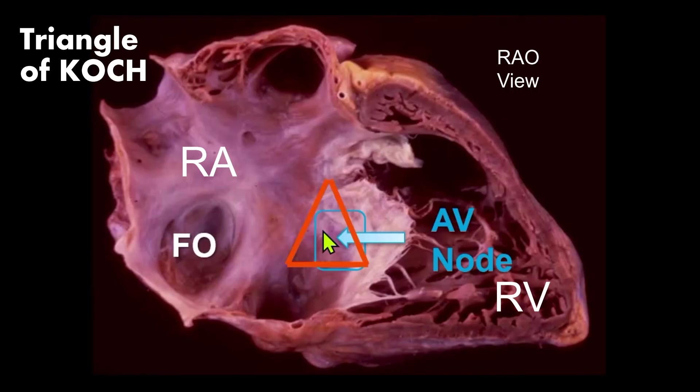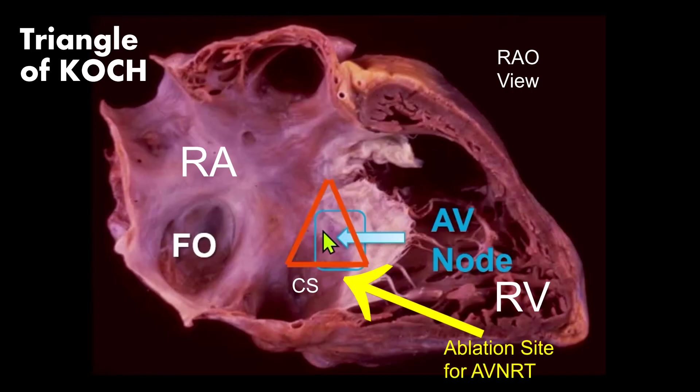The triangle of Koch is clinically significant because it marks the location of the atrioventricular node and the opening of the coronary sinus. The slow fibers of the node traverse this triangle base, and this region is the target of ablation for typical SVT or slow-fast AVNRT.